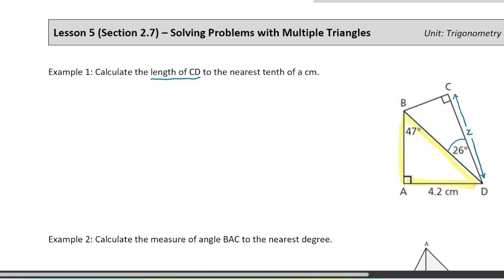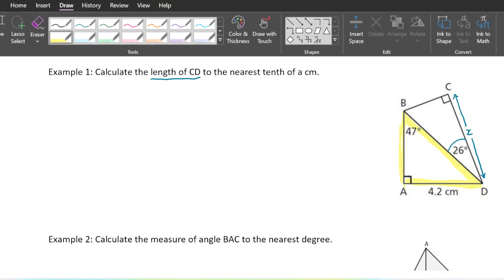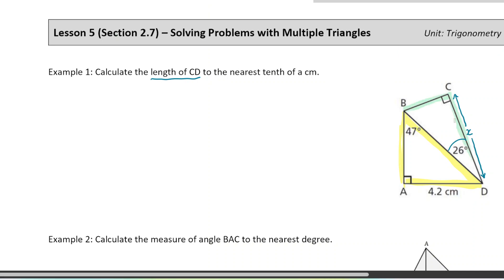So let's label the triangles I can work with. I've got this yellow triangle ABD — I do have a side length for that triangle, so maybe I can use that. And then I have this green triangle with the side length I want to find, but I don't know much else about it. My action plan: step one is to use the yellow triangle to determine BD, which I'll call Y. Then once I have that side length, I'll be able to find X because I'll have one side length on that next triangle.